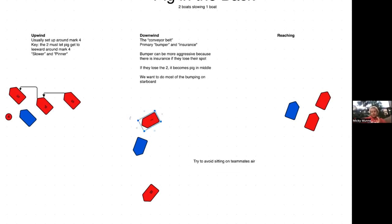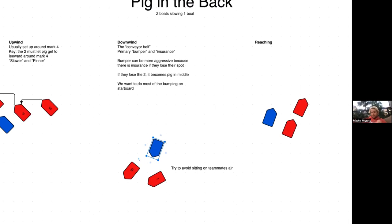The other thing is if you lose your spot, you want to give it up right away and go straight into sitting on their breeze. All we want to do is slow this boat. Even if we both lose this boat, we can still do pig in the front on them and eventually get back to this combination where we can do pig in the back. Just make sure one boat, anytime one boat is bumping, the other boat is sailing fast, and we're just alternating bumps between the two boats.